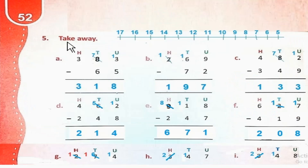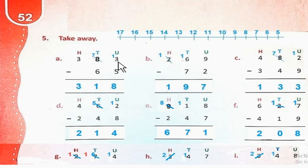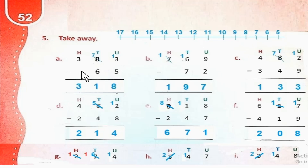Number 5, Part A: Take away 383 minus 65. 3 minus 5 — borrow करेंगे, तो यह 8 से 7 हो जाएगा और 13 minus 5 = 8. 7 minus 6 = 1. 3 minus 3 = 0. So the answer is 318.